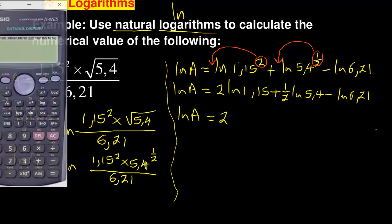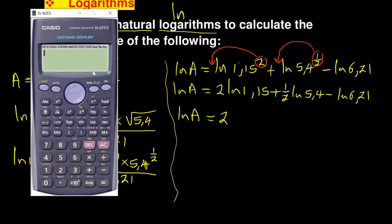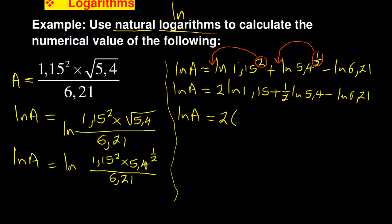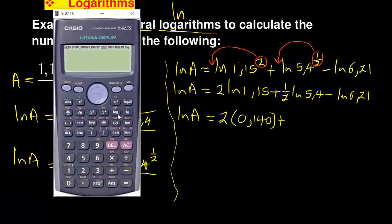2 - now with a calculator you have to find this particular ln 1.15 in 3 decimal places. You can round off to 3 decimal places: shift, setup, then 6, number 6 there you fix it to 3 decimal places, it will be 0.140. So this is multiplying 0.140, and then plus you do the same thing with ln 5.4, you round off shift, setup, 6 and 3, which is 1.686.